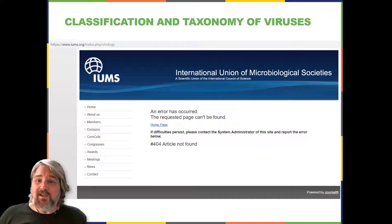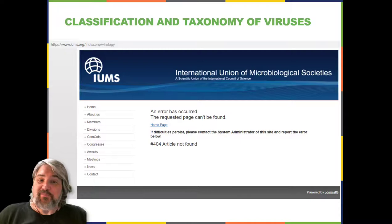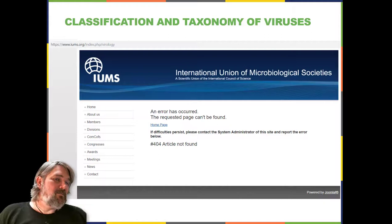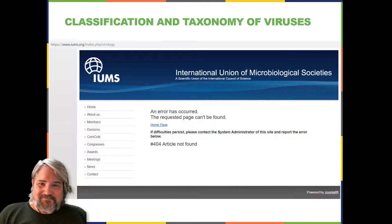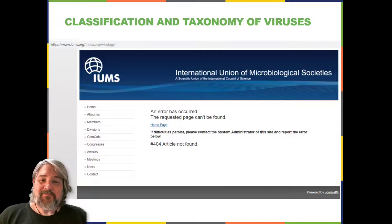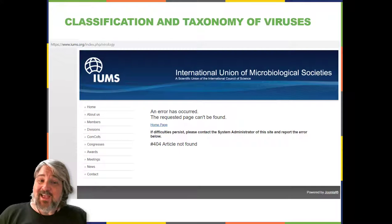Classification and Taxonomy of Viruses: Although viruses are not classified in the three domains of life, their numbers are great enough to require classification. Since 1971, the International Committee on Taxonomy of Viruses, ICTV, has been tasked with developing, refining, and maintaining a universal virus taxonomy. Since viruses can mutate so quickly, it can be difficult to classify them using binomial nomenclature. Thus, the ICTV's viral nomenclature system classifies viruses into families and genera based on viral genetics, chemistry, morphology, and mechanism of multiplication.